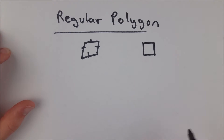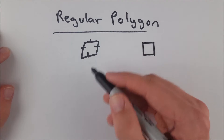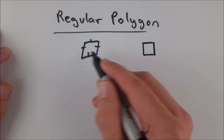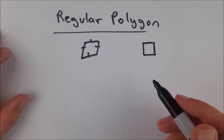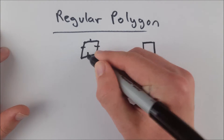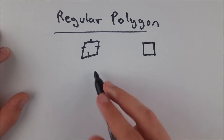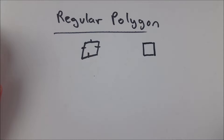I've given a couple examples here. This is a rhombus that is equilateral — equilateral means that all of its sides are congruent. However, it is not equiangular. This angle is very clearly larger than this angle. Therefore, this rhombus is not a regular polygon because it's not both equilateral and equiangular.